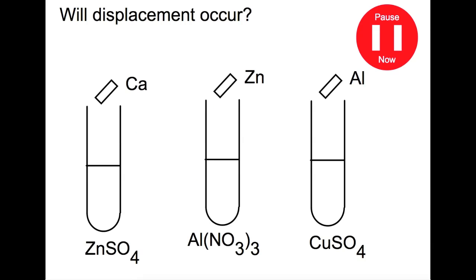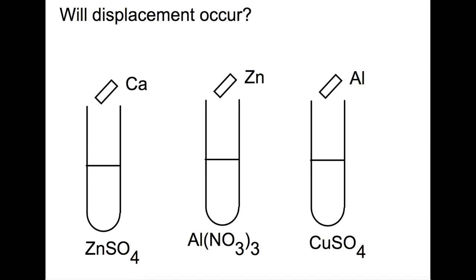Pause the video now and have a look at these three reactions and which of the tubes displacement will occur in. To be able to do this you need to look at page 10 of your data book — this will show you the electrochemical series. Looking at the three reactions: calcium going into a solution of zinc — calcium is more reactive than zinc so it will displace. Zinc going into a solution of aluminium — zinc is less reactive than aluminium so it will not displace the aluminium. And finally aluminium going into a copper solution — aluminium is more reactive than copper so it will displace the copper from solution.